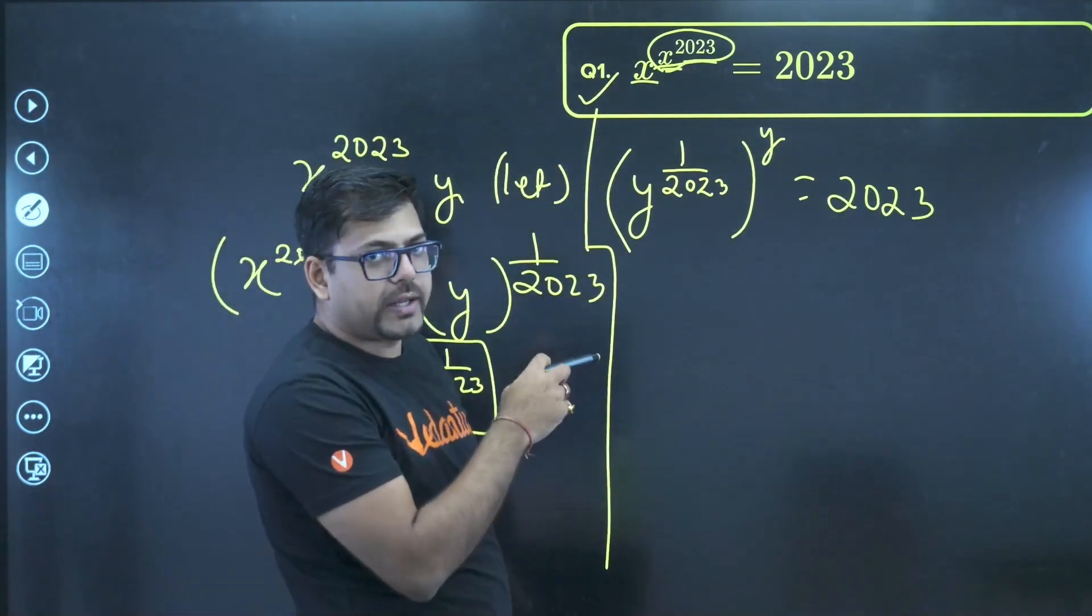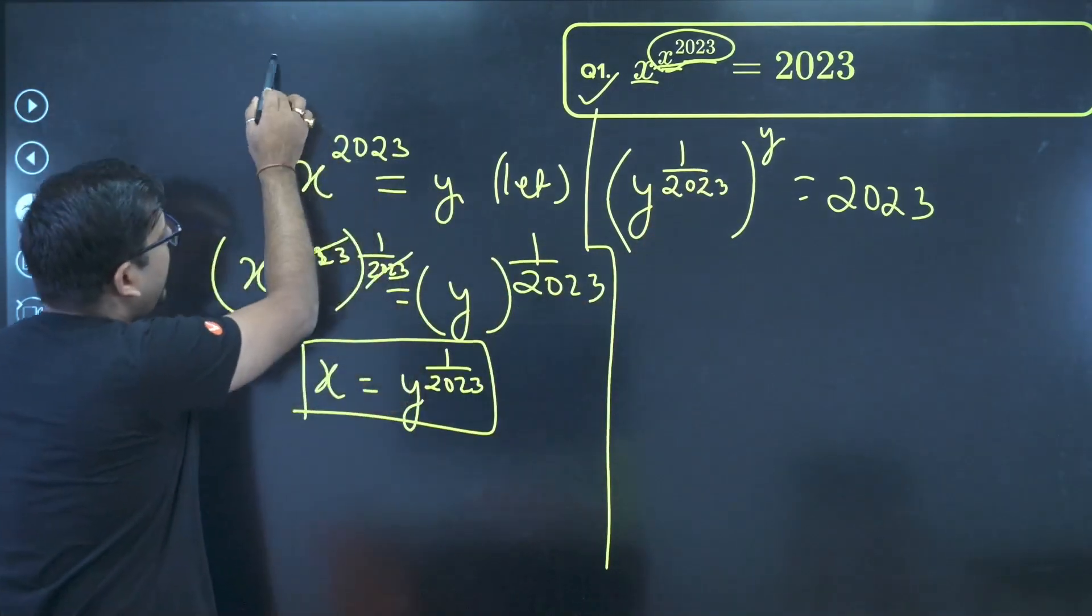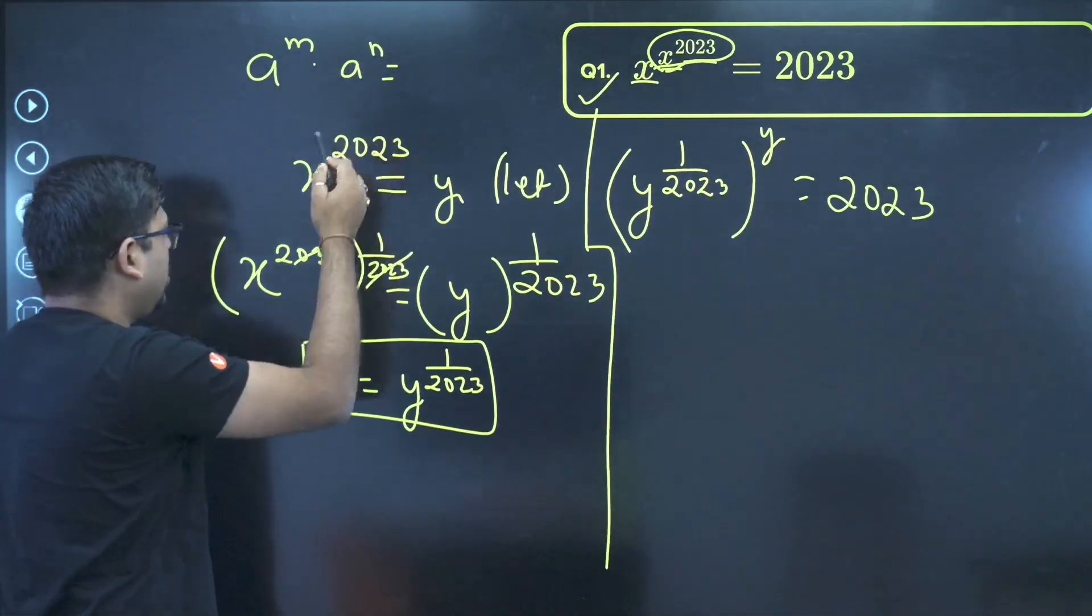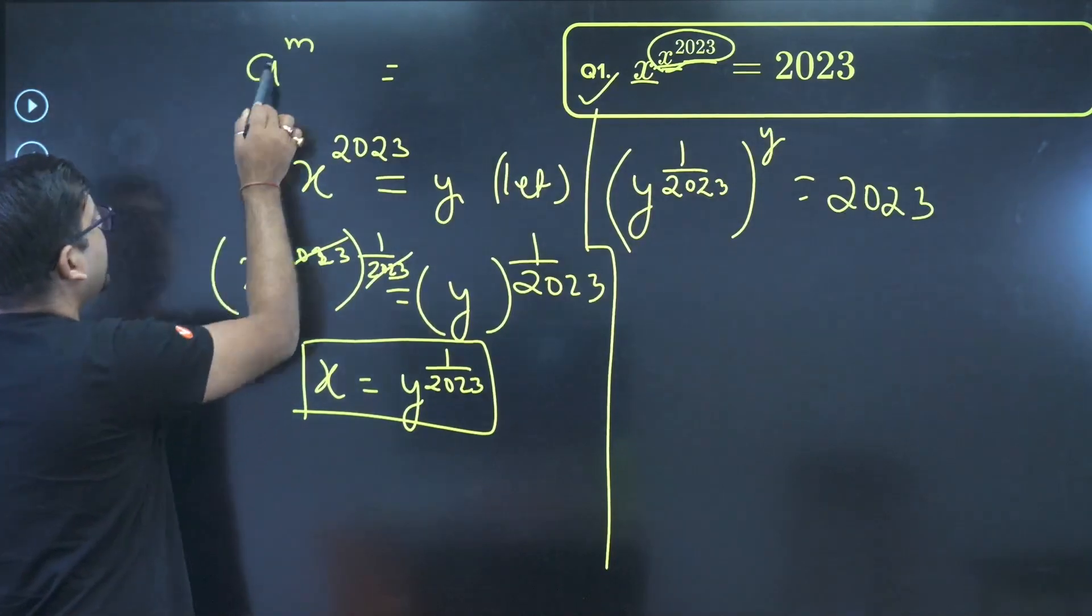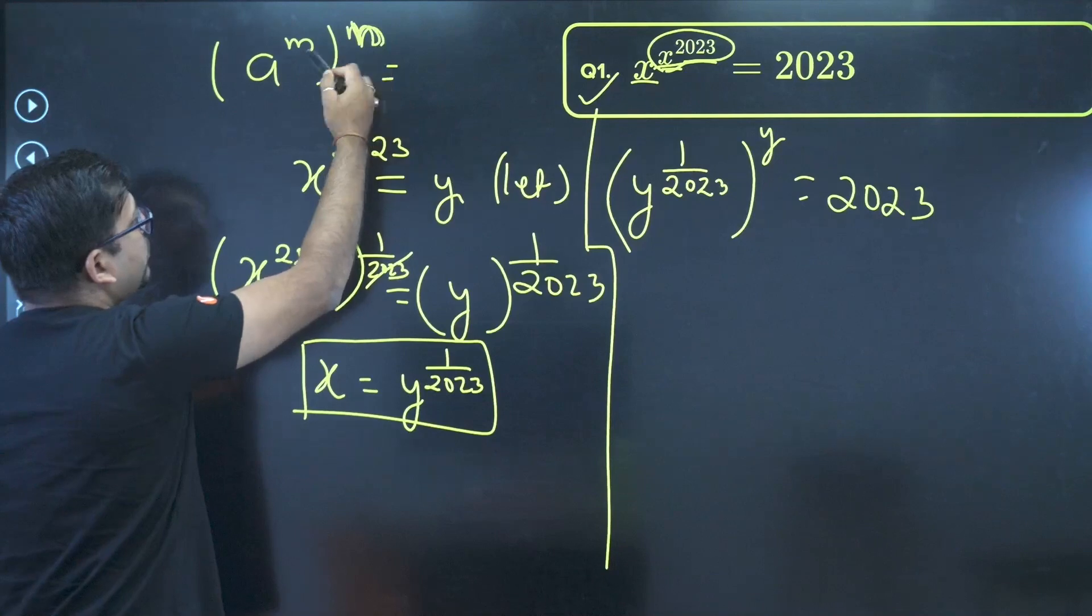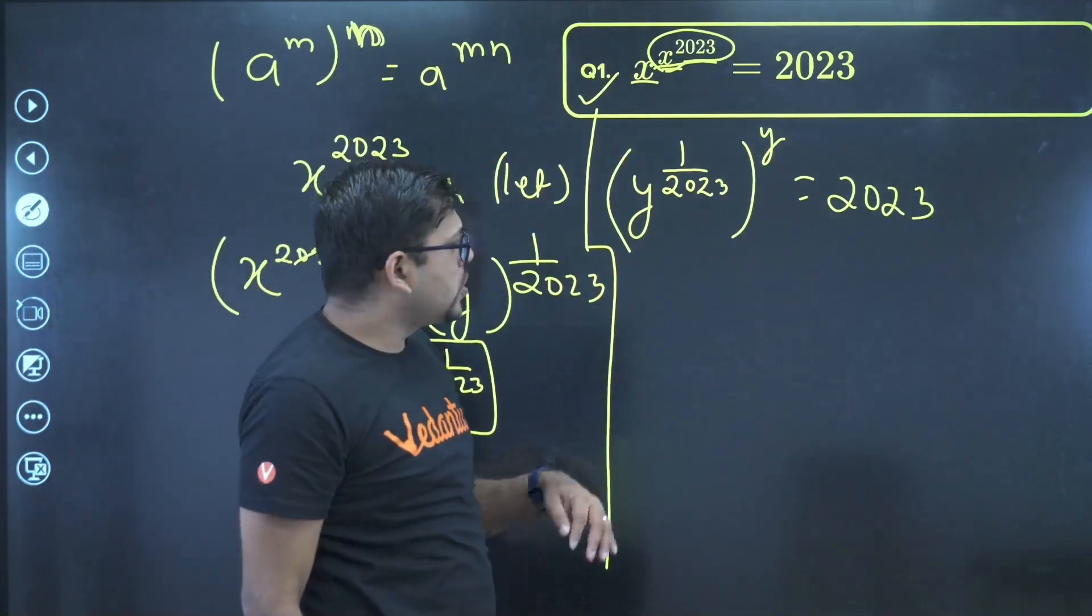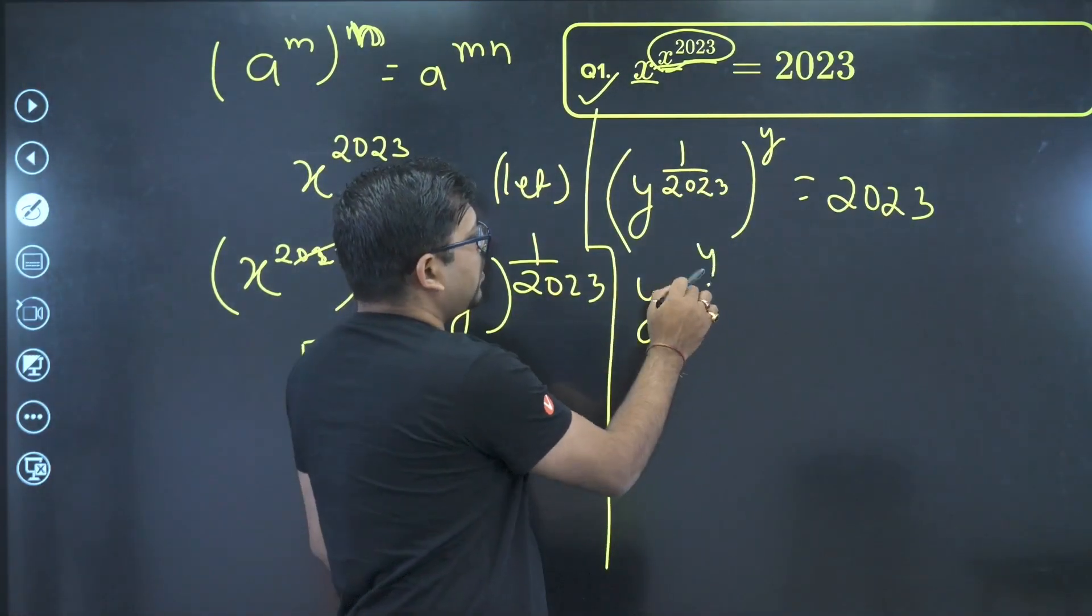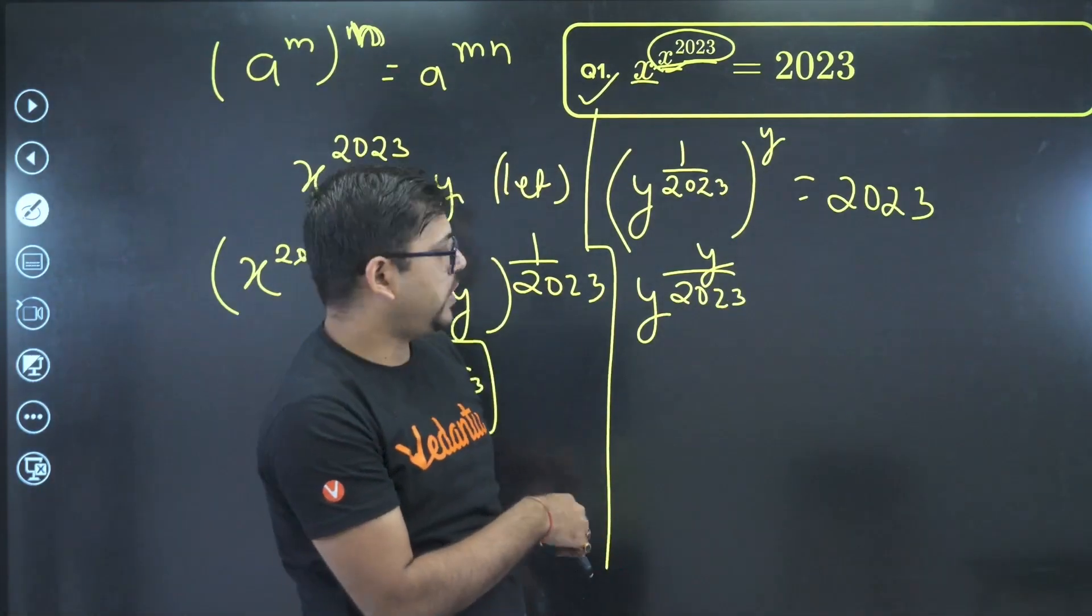So again, here I can do one thing. I can just multiply this because you know the property a raised to power m whole raised to power n. Sorry, not multiplied. It's a raised to power m whole raised to power n. So whenever we have whole raised to power n, so this gets multiplied and this becomes a raised to power m into n. So using the same property, you can simply multiply. This will happen y raised to power y into 2023, 1 upon 2023, and hence we have got this.